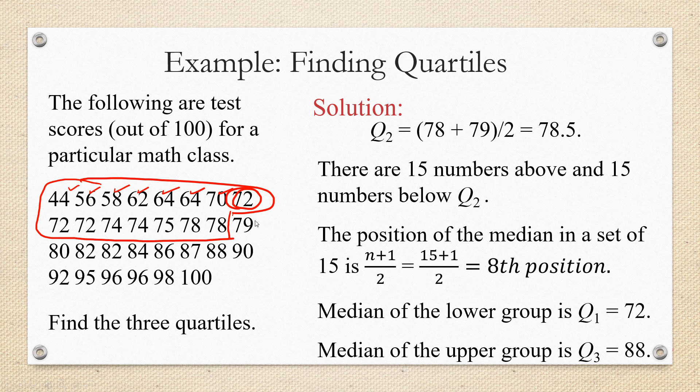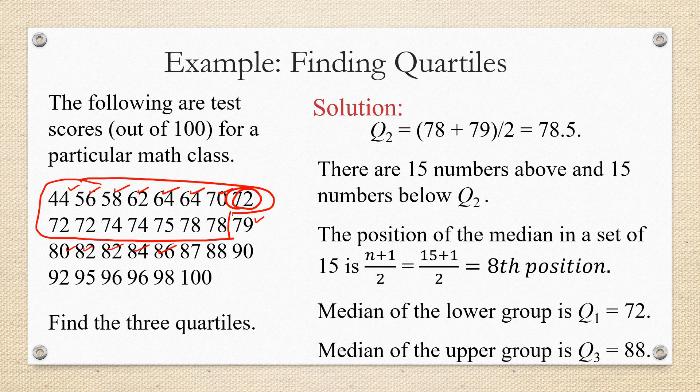In the upper group, the eighth position is 1, 2, 3, 4, 5, 6, 7, 8. It's 88. That's the median of the top 15 numbers. So that's going to be Q3. So we've found all three quartiles.